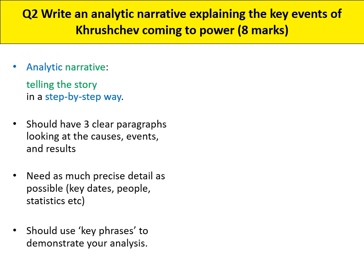Don't stop the video just yet — we're just going to look at the final type of question in the Cold War exam. We've looked at question one, which is explaining two consequences of something, and question three, which is explaining the importance of something. The final one is question two in the middle: write an analytic narrative explaining the key events of something. An analytic narrative is essentially telling a story in a step-by-step, chronological way from beginning to end, showing why one thing led to another. You should have three clear paragraphs covering causes, then events, then results. The vaguer you are the lower your score; the more precise dates or statistics you use, the better.